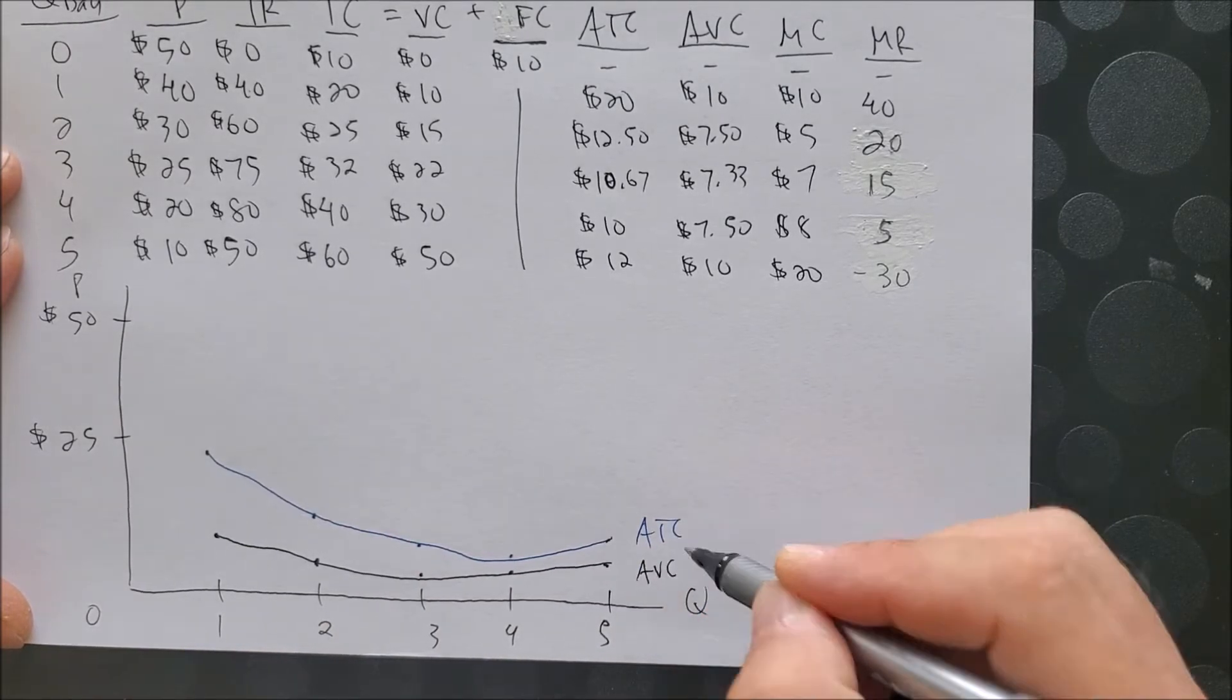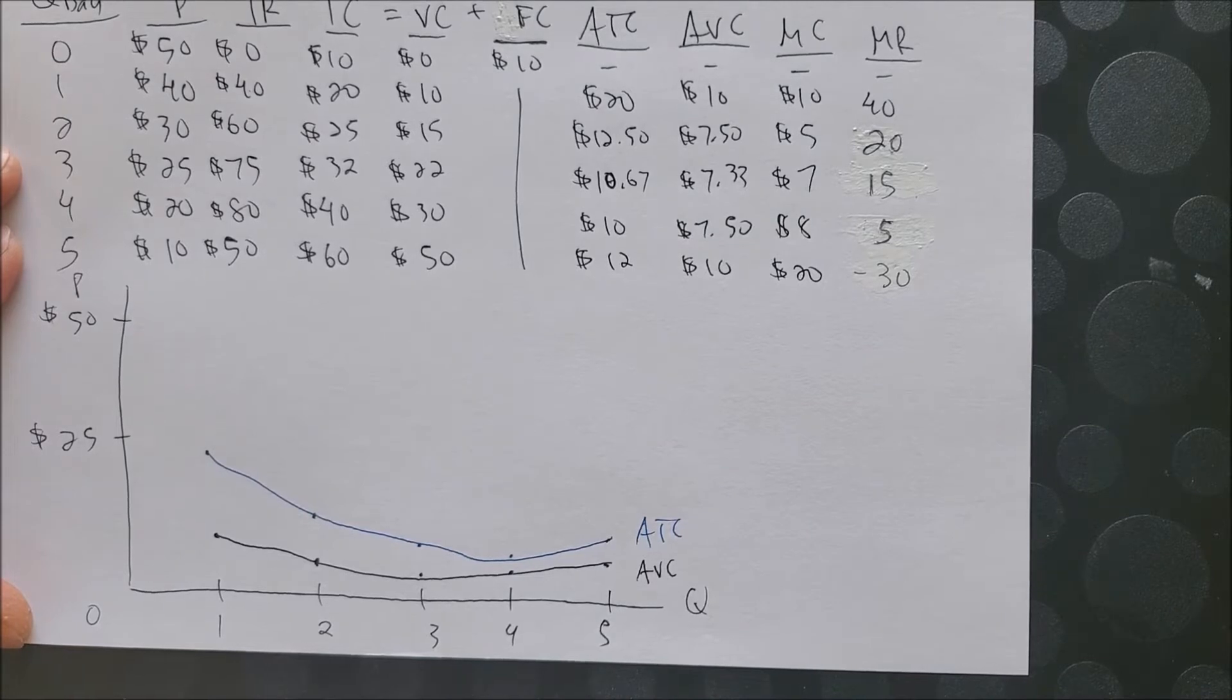Once again, AVC cannot be above ATC because AVC plus AFC gives us ATC. Once we have AVC graphed, we can now move into MC.